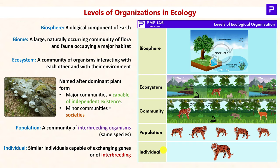The first level in ecology is individuals or species — those capable of interbreeding, meaning they can produce offspring through sexual or asexual means. Many such individuals together give rise to a population, and many such populations together form a community. There are two kinds of communities: major communities and minor communities. Major communities are capable of independent existence; though dependent on surroundings for various needs, they can survive on their own for a very long duration even under adverse conditions.